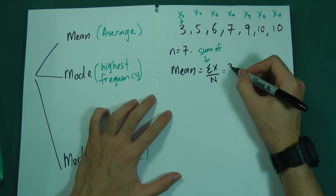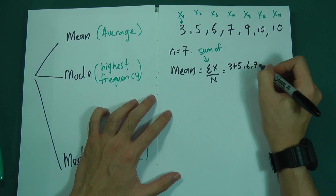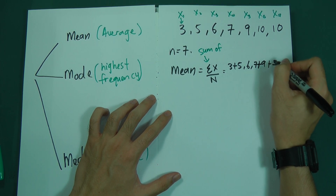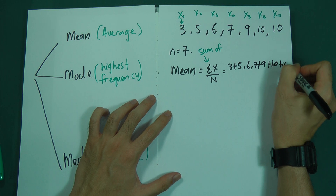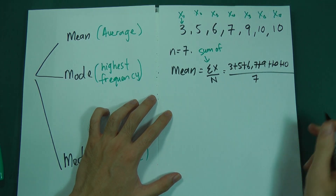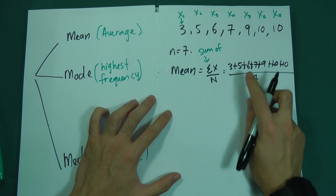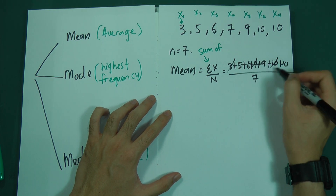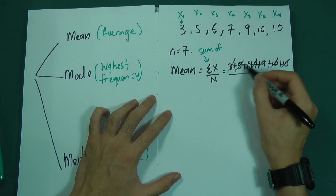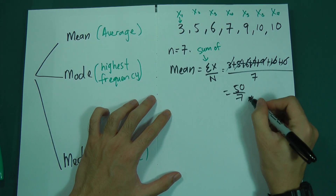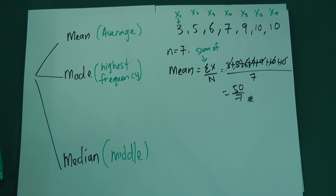So mean equals 3 plus 5 plus 6 plus 7 plus 9 plus 10 plus 10, all divided by 7. When you sum them together you get 50, so 50 divided by 7 gives you the mean value. Mean is very simple — just sum everything together and divide by n.